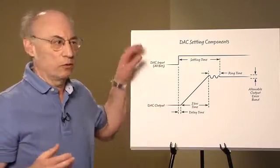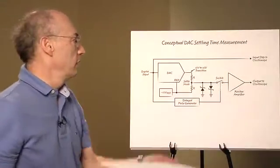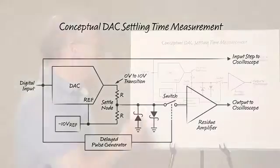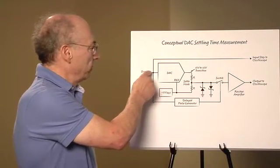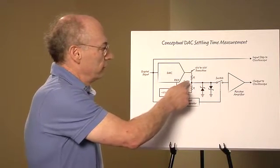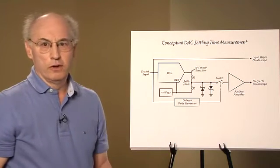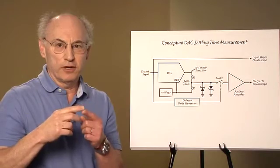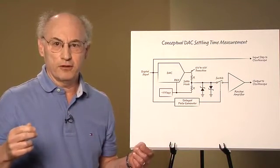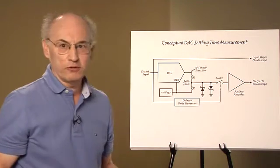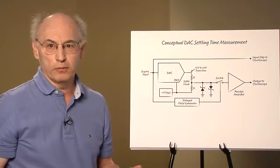How do we measure that to a part per million? This is a very conceptual D to A settling time measurement scheme. We apply a digital input to the DAC which is summed with a DC reference and brought out to a switch. At the summing point, you should read zero volts when the D to A converter is settled. During the time that D to A is unsettled or slewing, you have large signal swings at this node which will saturate the oscilloscope promoting bad measurement.